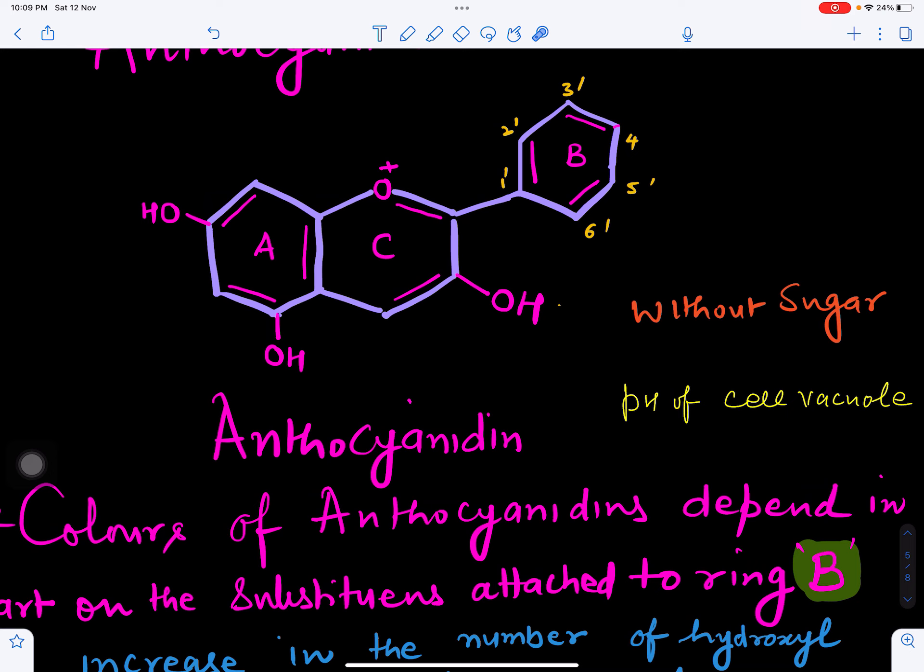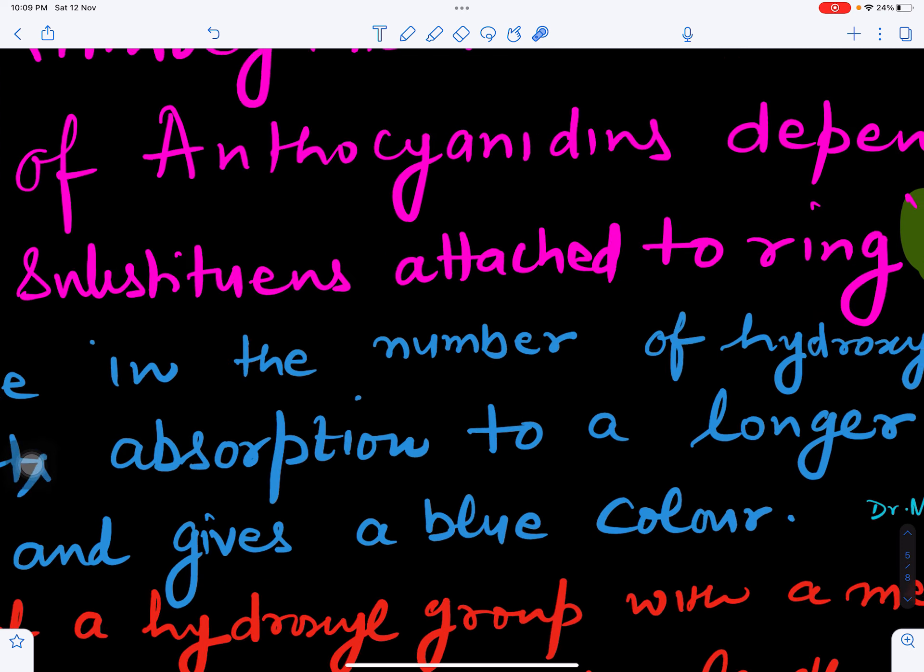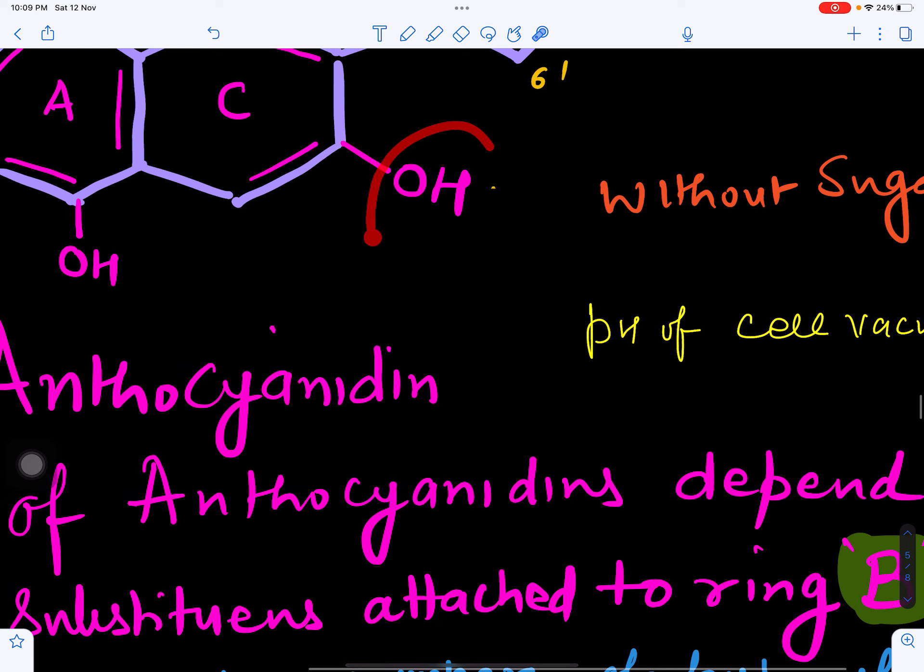These pigments are present in the vacuole of the cell, and color is also determined by pH of the cell vacuole. Color of anthocyanins, because we have seen different colors, depends in part on the substituent attached to ring B. That will determine the color.